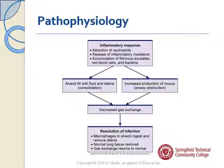What's the pathophysiology of pneumonia? You have an inflammatory response because of infectious particles. The alveoli fill with fluid and debris, causing lung consolidation. You have increased production of mucus, which can lead to airway obstruction — both contributing to decreased gas exchange and hypoxia. As the infection resolves with antibiotic treatment, macrophages in the alveoli ingest and remove the debris, normal lung tissue is restored, and gas exchange should return to normal.